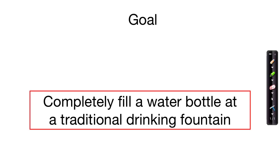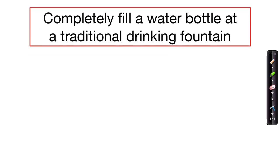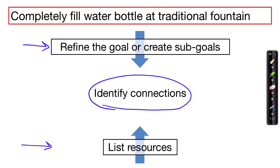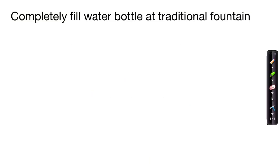We'll start the diagram by placing the goal near the top. In the end, our diagram will look like refined goals at the top, listed resources near the bottom, and connections identified with solid lines between goals, sub-goals, other goals, and resources. I'm going to talk us through the process of brain swarming, but remember the actual exercise is done in silence.